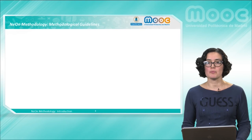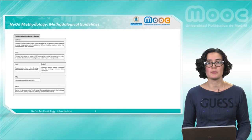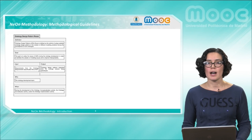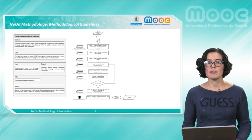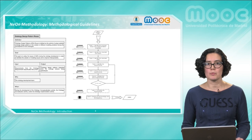The methodological guidelines proposed by the NeOn methodology are described with three components. First, a guiding card that provides functional and practical information on each process and activity. This card includes the definition and purpose of the process and activity, the necessary inputs and generated outputs, who performs the process or activity, and when it can be performed. Procedural information is also provided in the form of a workflow, which details how to perform the process or activity and contains the inputs, outputs, actors involved, and details, methods, techniques, and tools that can be used.